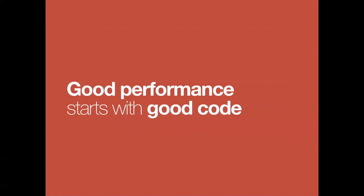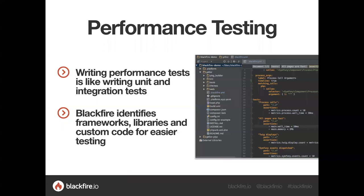One of the best ways to ensure you have good code is to test it, and the same is true for performance. Good performance starts with good code, and this is where Blackfire adds value to a developer's workflow. Blackfire has the ability to create tests using a rich expression language that allows developers to express any kind of assertions. Tests can be used for defining a project's performance thresholds, testing the code's behavior, and ensuring there are no performance regressions.